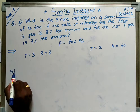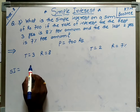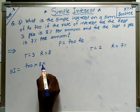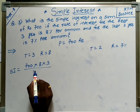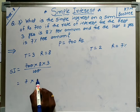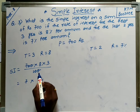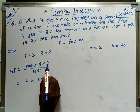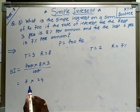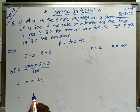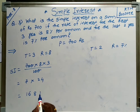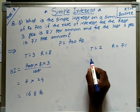We will calculate using the formula SI equals P into R into T upon 100. For the first 3 years: P is 700, R is 8, T is 3, divided by 100. That gives 7 into 24, which equals 168 rupees.